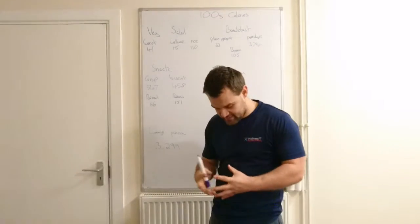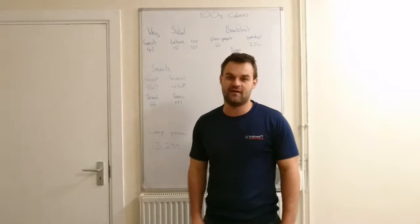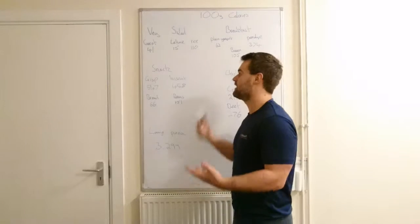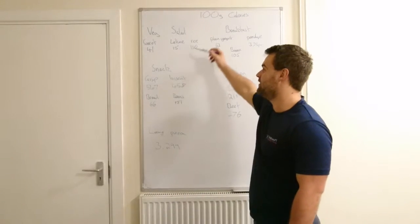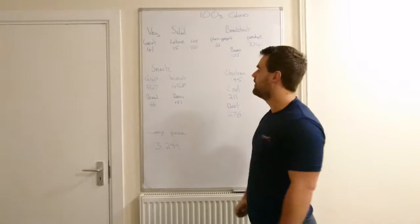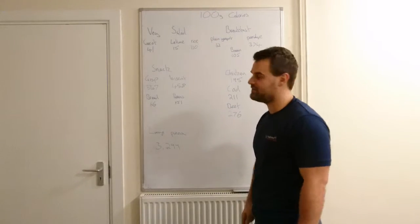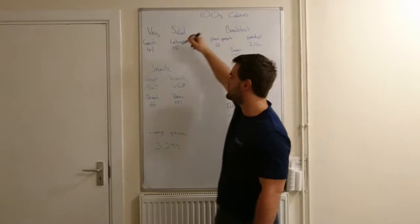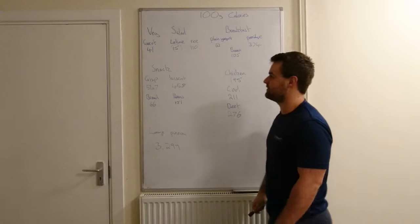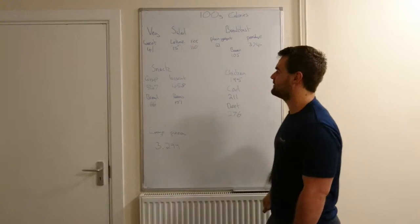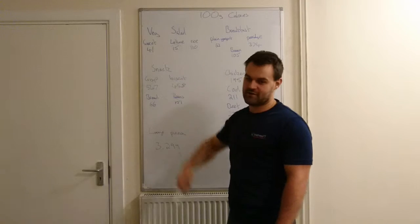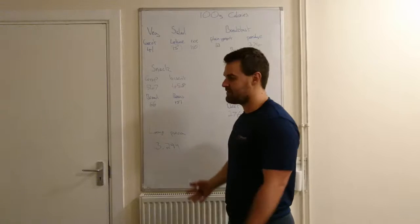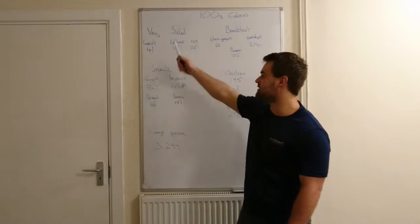The first biggest, easiest swap to make is with your dinner. Instead of having rice or pasta, have veggie salad. These are per 100 grams. If you were to have rice with your dinner, that is 110 calories. If you were to have carrots or vegetables, 41 calories. If you were to have lettuce, 15 calories. You can have three times as much carrots versus rice, that'll fill you up a lot more and it'll be the same amount of calories, or you can have less and you'll save yourself 70 calories.